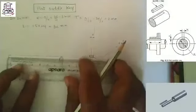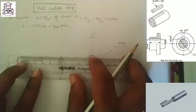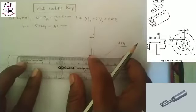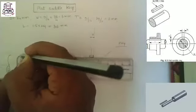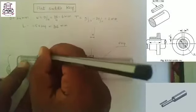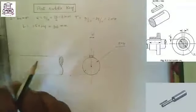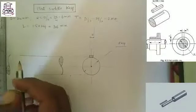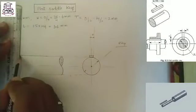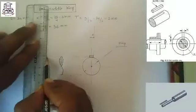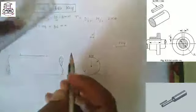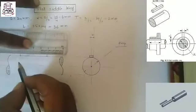Take 36 mm from the key. First mark one point on shaft, from that point please measure 36 mm and draw one line. This is the length of key, 36 mm.